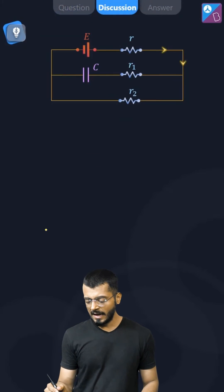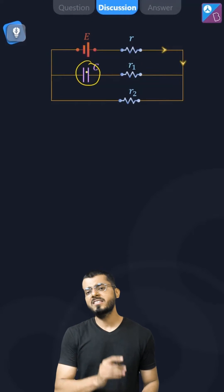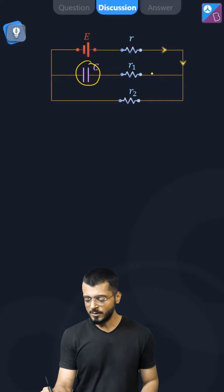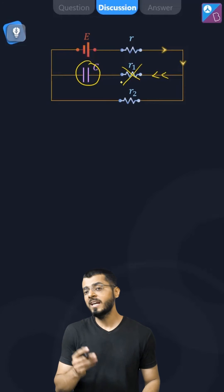So let us see that. At the steady state, what will happen is this capacitor will not accept any more charges. So there are no charges flowing through this arm. That is, there is no current through this resistance, so we can remove it.